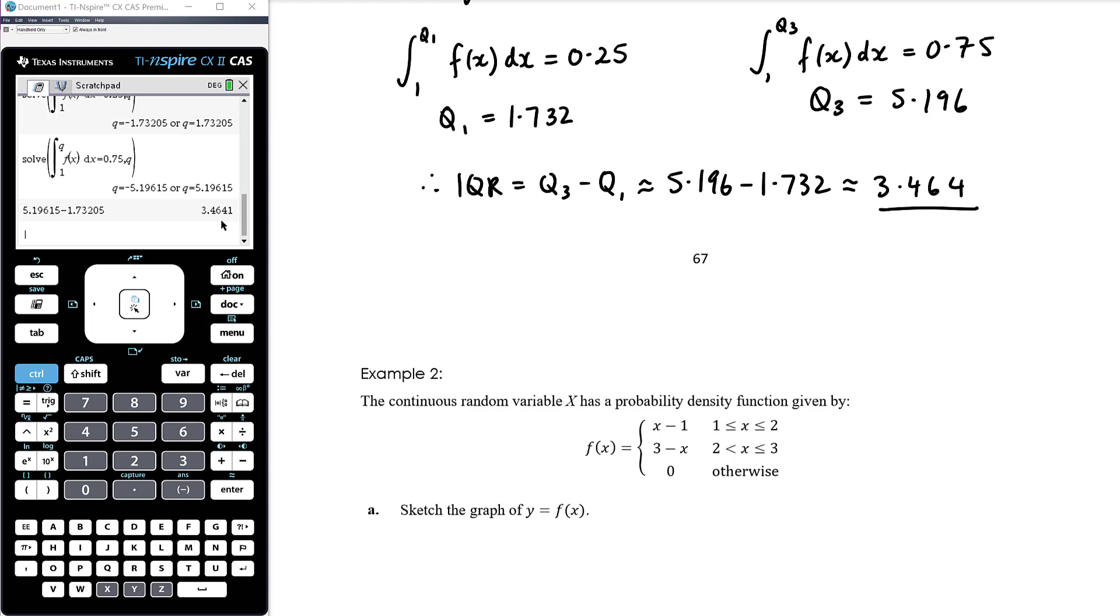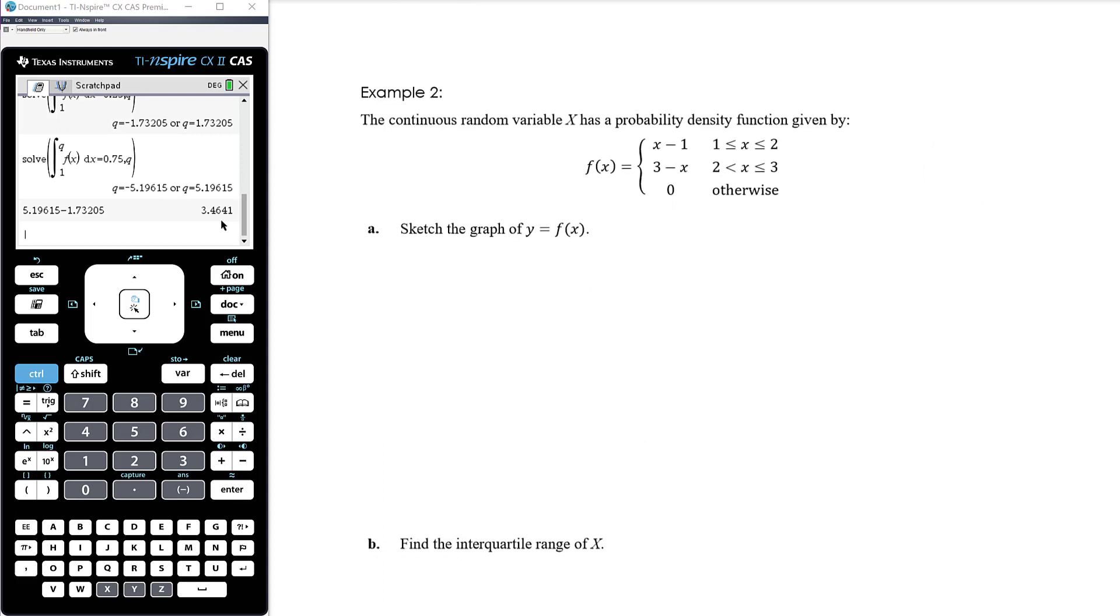All right. Example 2, the continuous random variable x has a probability density function given by this piecewise function. Sketch the graph. OK, so they're both linear. So just think about endpoints. So when x equals 1, this will equal 0. When x equals 2, it will equal 1. So it essentially does that. Sorry. That. OK. And then when x equals 2, it equals 1. So it goes through the same point. When x equals 3, it equals 0. So it basically does that. And then 0 everywhere else.